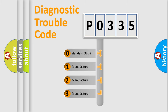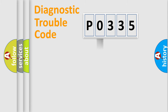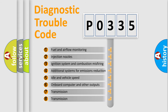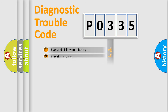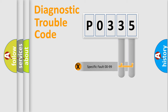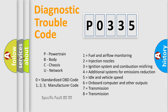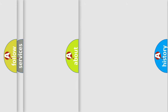If the second character is expressed as zero, it is a standardized error. In the case of numbers 1, 2, or 3, it is a more specific expression of a car-specific error. The third character specifies a subset of errors. This distribution is valid only for the standardized DTC code, and only if the second character is expressed by the number zero.